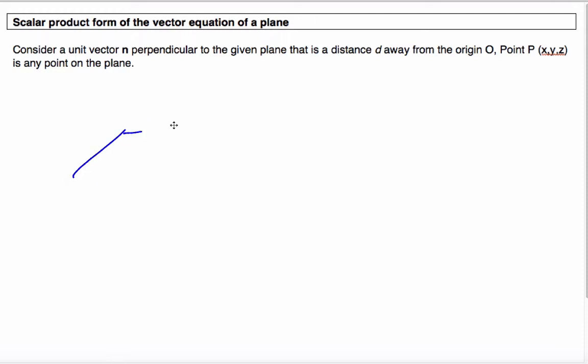And so we have a plane, and we have the origin O here, and we have a point X on the plane, and it is a distance d away. But I also have a normal vector, that N, that is a unit vector. And so it's perpendicular here.